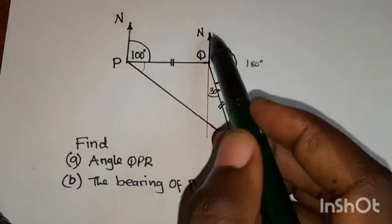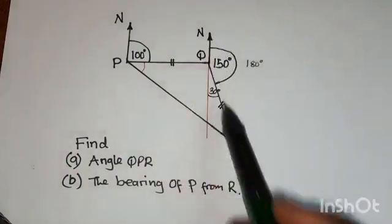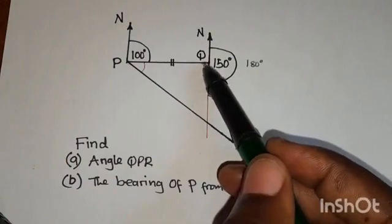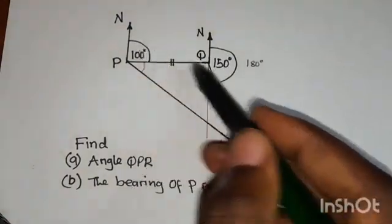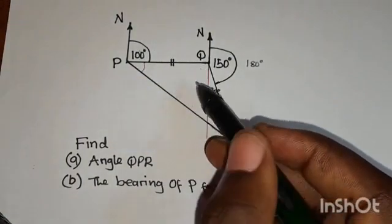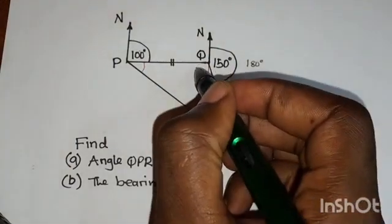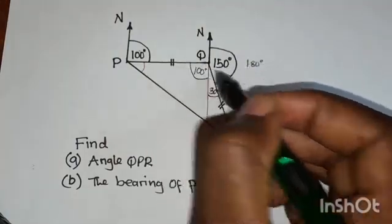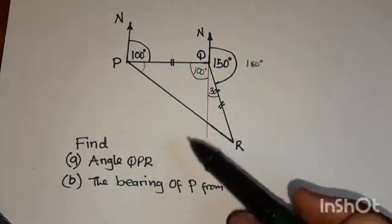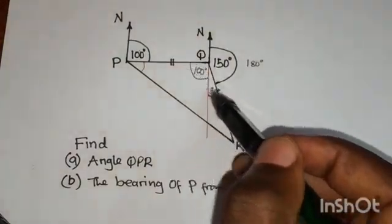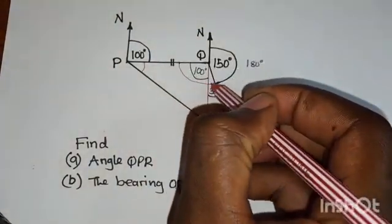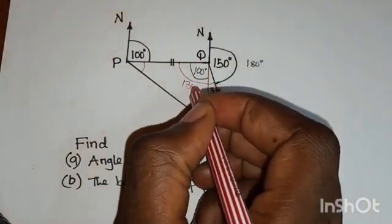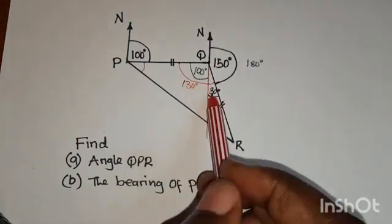When you look at this north and this north, they are parallel lines, and this line here is a transversal. So this angle is alternate to this angle, and alternate angles are equal — meaning this angle is also 100 degrees. So the entire angle here is 130 degrees, because 100 plus 30 gives us that.